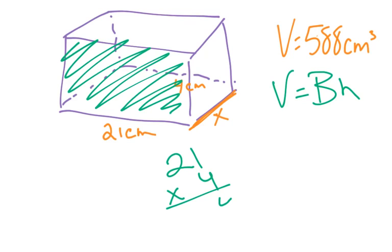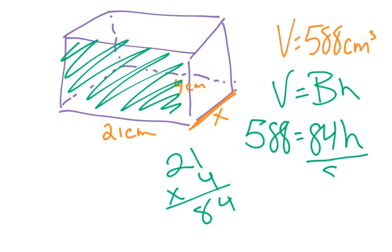1 times 4 is 4. 2 times 4 is 8. All right, we know that our volume is 588 and our base is 84 and we're missing our height. 84 and the height are being multiplied together. I'm going to divide by them.